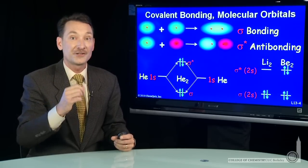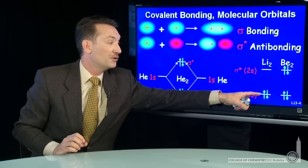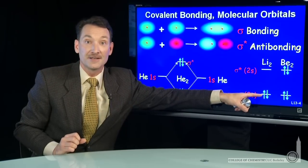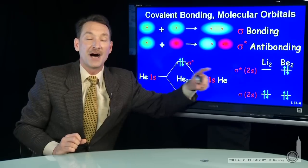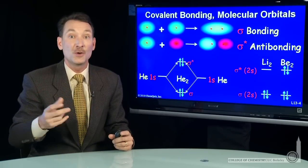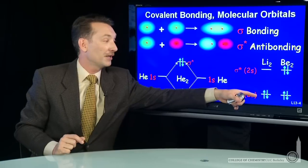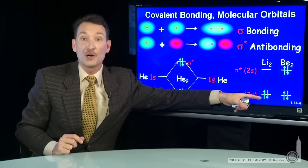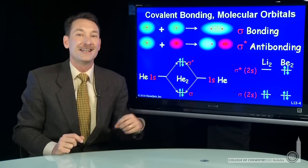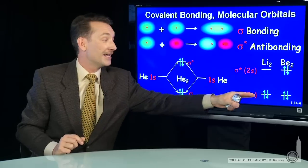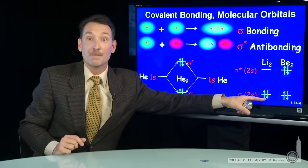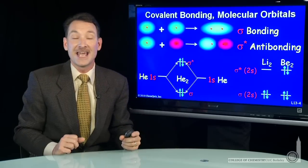Lithium has one electron in its 2s orbital. So two lithiums, two electrons. They fill up the bonding orbital for the lithium molecule. Li2 we would predict to be a stable molecule. It has a bond order of one. The bond order is defined as the sum of the bonding electrons minus the antibonding electrons.